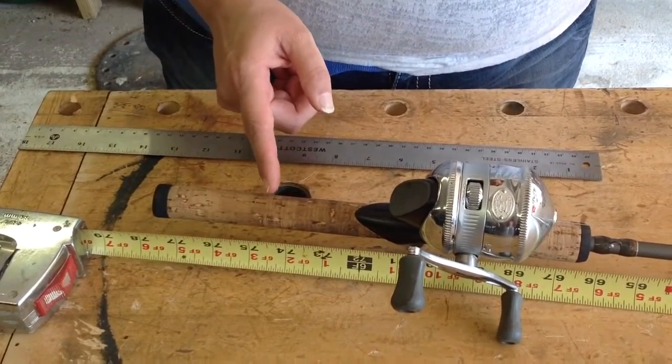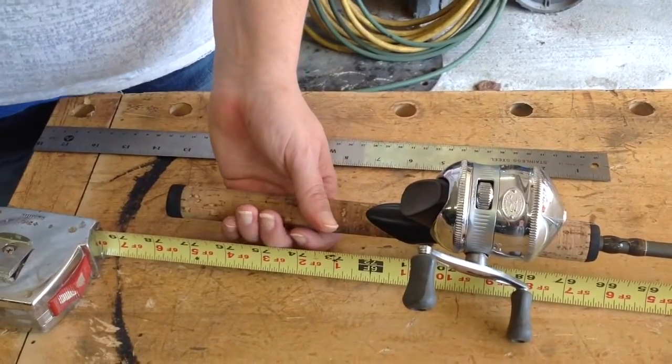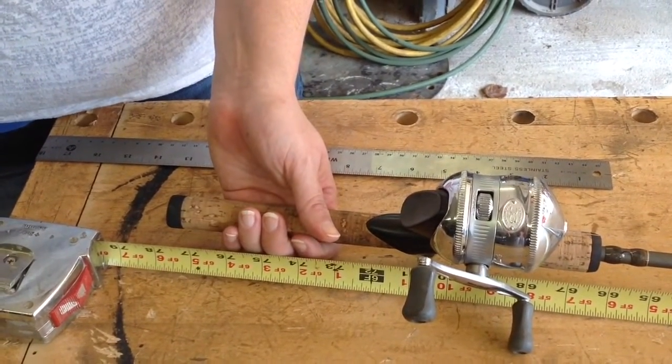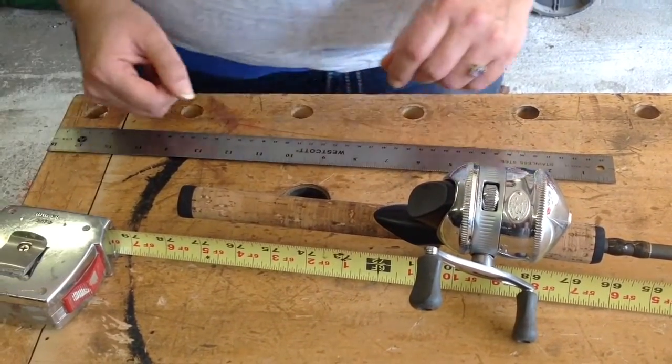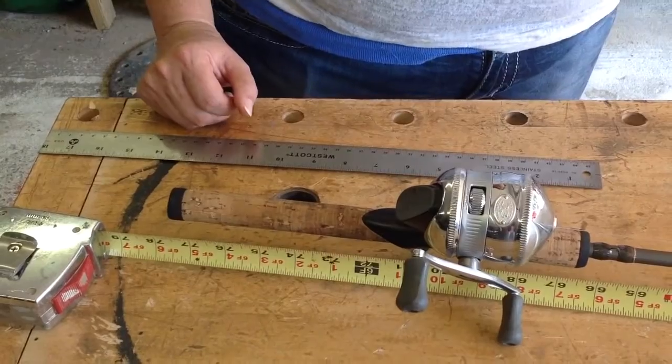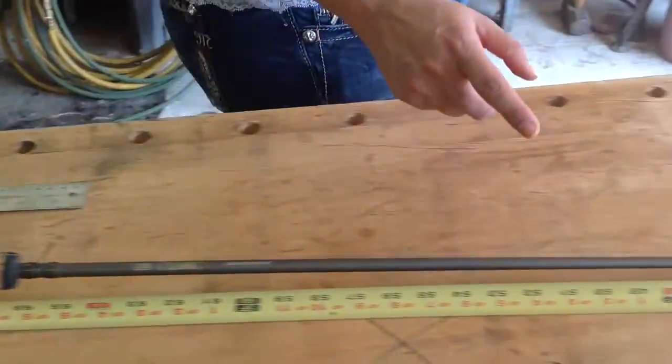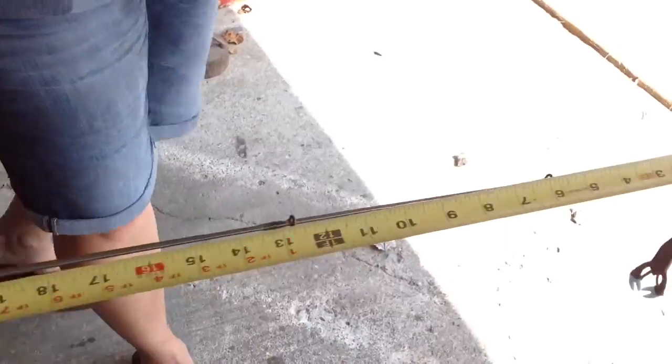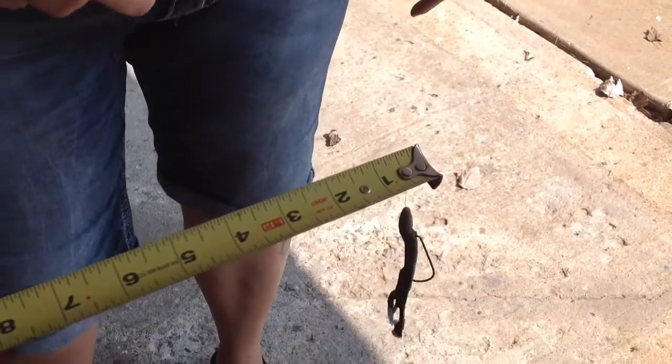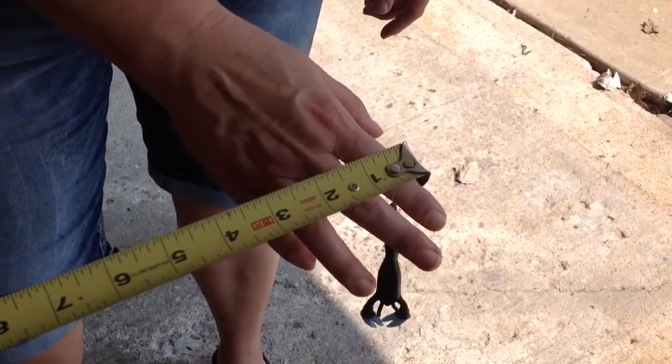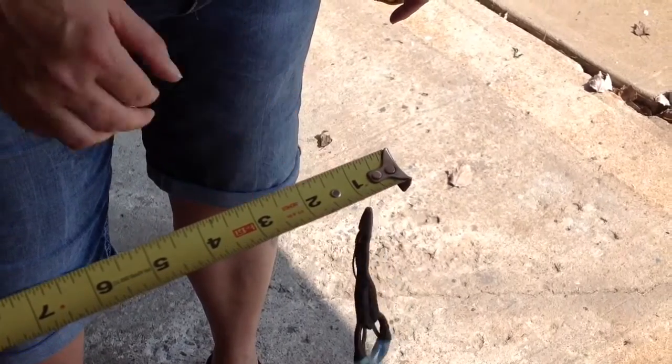So our effort force would be right here, because that's where my hand is going to be when I'm holding the fishing rod. And my resistance force is going to be at the end. Down here is where we're going to be reeling in the big one. Our big fish is down here, and that is what is going to be causing our resistance on our pole.